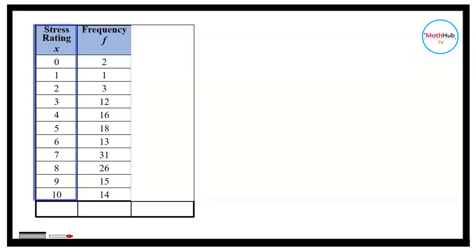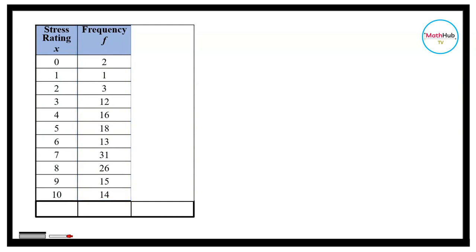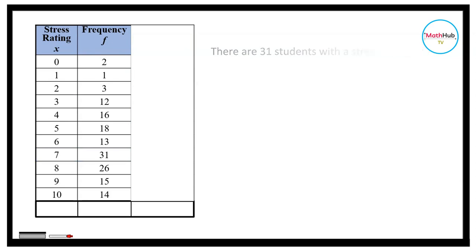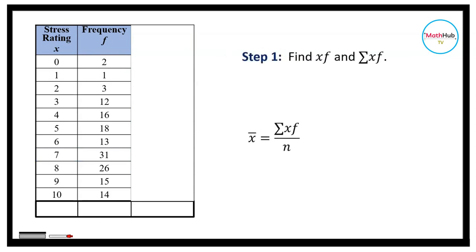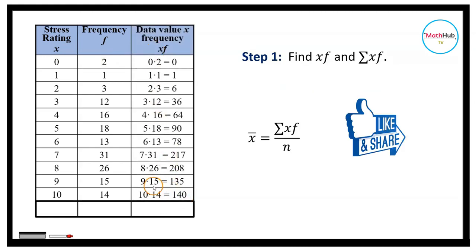The first column represents the stress rating from 0 to 10. F is the frequency — the number of times that rating appeared. For instance, 7 is a stress rating and 31 students responded 7. To get the mean, we first find the product of the stress rating and the frequency — multiplying the first column by the second column. So 10 times 14 is 140, 9 times 15 is 135, 8 times 26 is 208, and so on.